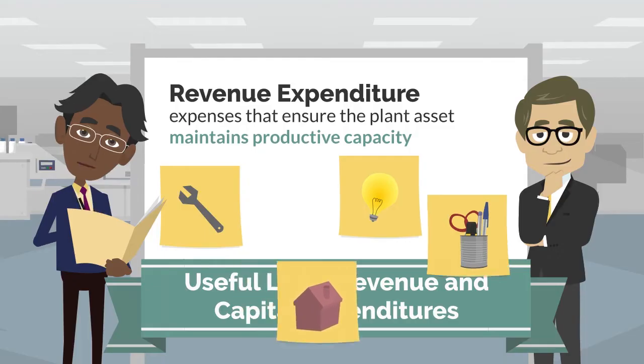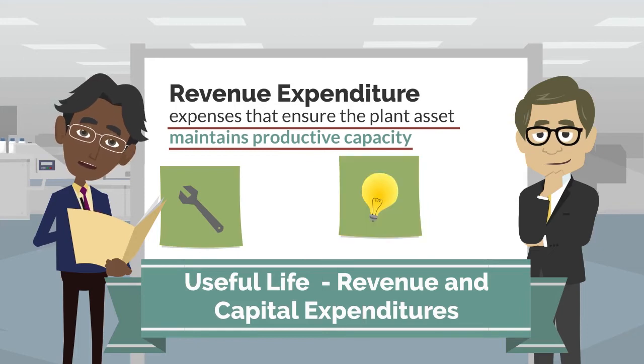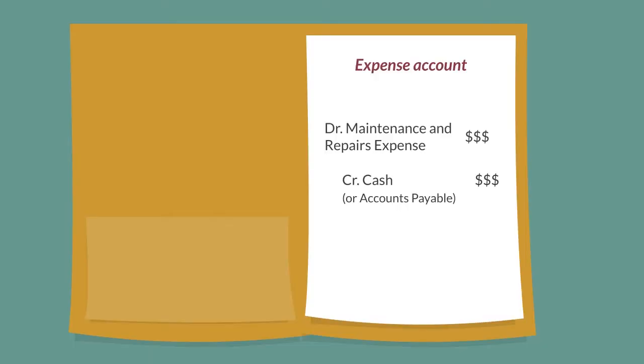Over the course of this useful life, there will be revenue expenditures or capital expenditures associated with the asset. Revenue expenditures are expenses that help the asset maintain productive capacity. Think repair costs and utility costs to keep the asset running and performing optimally. These expenses are recorded in their own accounts. For example, a debit to maintenance and repairs and a credit to cash.